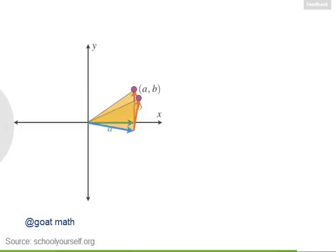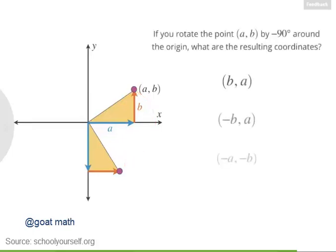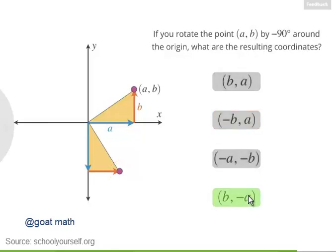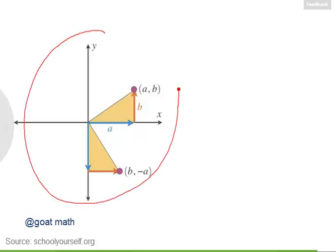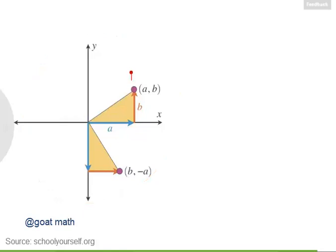Finally, let's rotate this point by negative 90 degrees. Remember, a negative rotation is clockwise, so the resulting point is down here. After a negative 90 degree rotation, the resulting coordinates are (b, negative a) — we swapped the x and y coordinates and then multiplied the new y-coordinate by negative 1. Don't worry about memorizing these different rules for 90 degree rotations around the origin. Your best bet is to draw a little sketch for yourself. But one thing to remember: positive rotations are counterclockwise and negative rotations are clockwise.